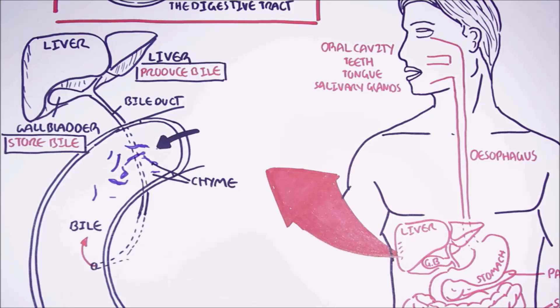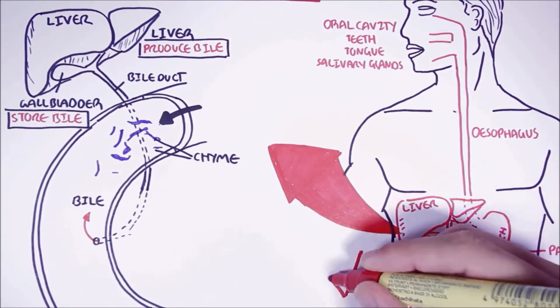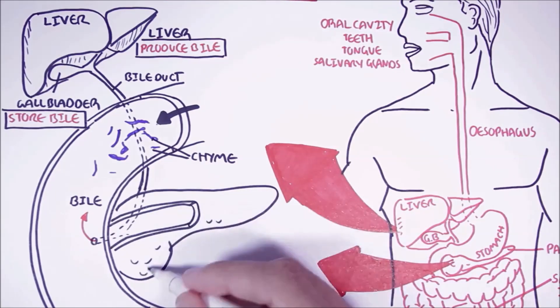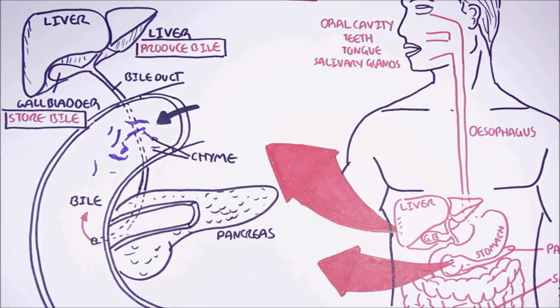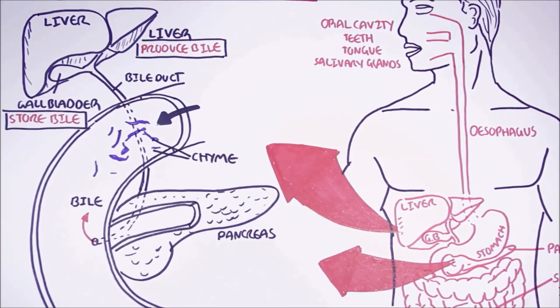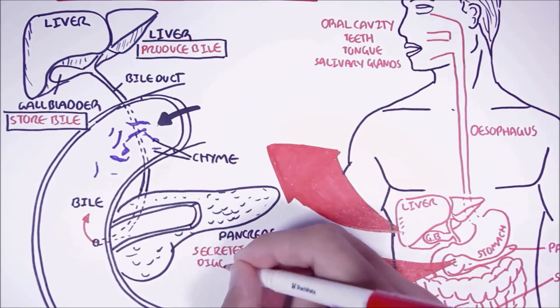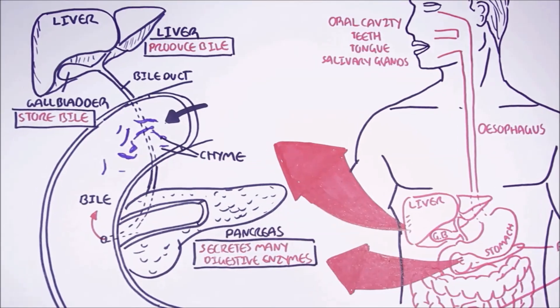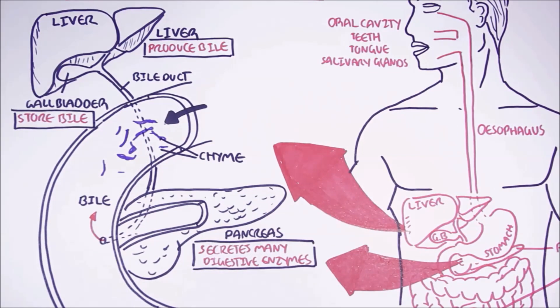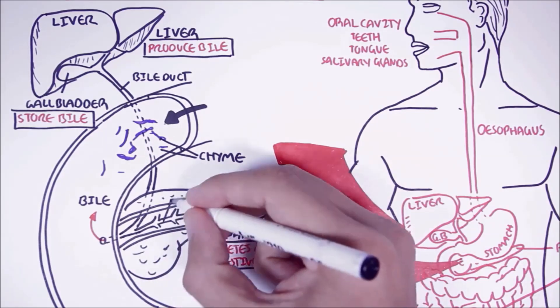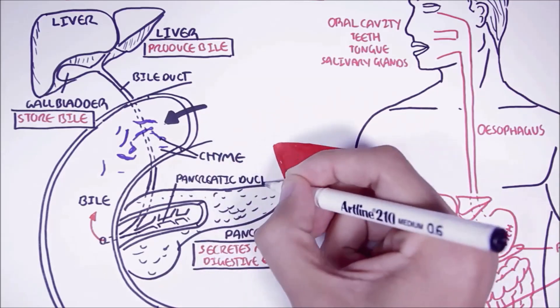The other important accessory organ that has to be mentioned here is the pancreas. The pancreas is an important endocrine and exocrine gland. During digestion, the pancreas secretes many enzymes.